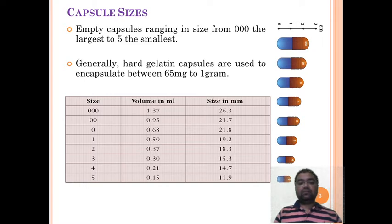Among these sizes, triple zero is not used for human use, it is generally for animal use and remaining sizes are for human use. The most common size for human use is size 0 which has volume 0.68 ml and size 21.8 millimeters.